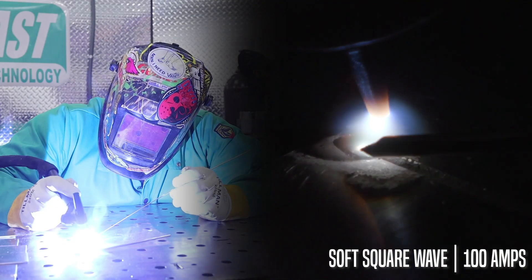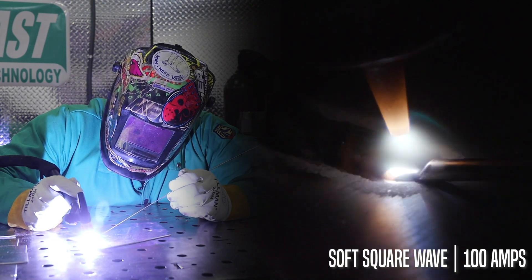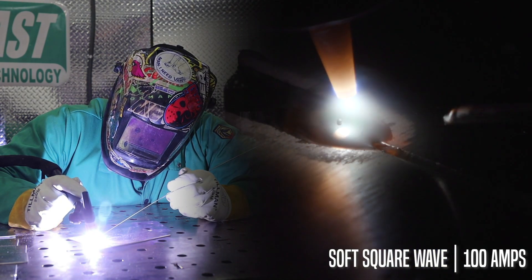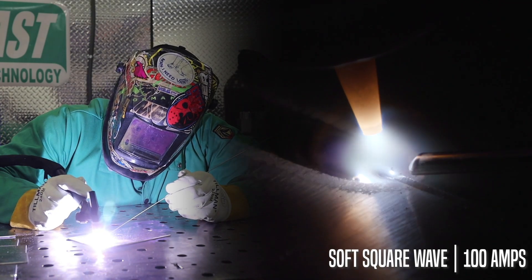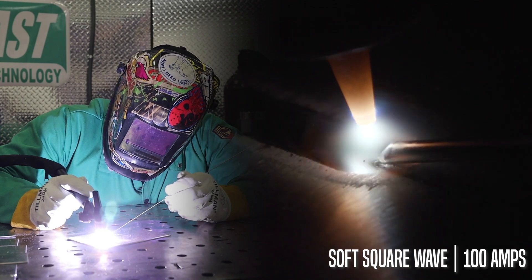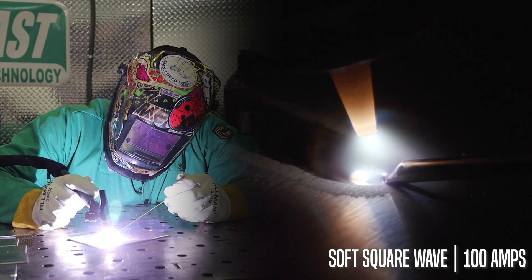Here we are running our advanced square wave bead. We light up, you can see it's a nice stable arc, good start. As we're running along, you're noticing the arc isn't wandering at all. We're getting a nice smooth etch line. The toes are tying in real nice on the bead. It's just a very nice, stable, very controlled arc.